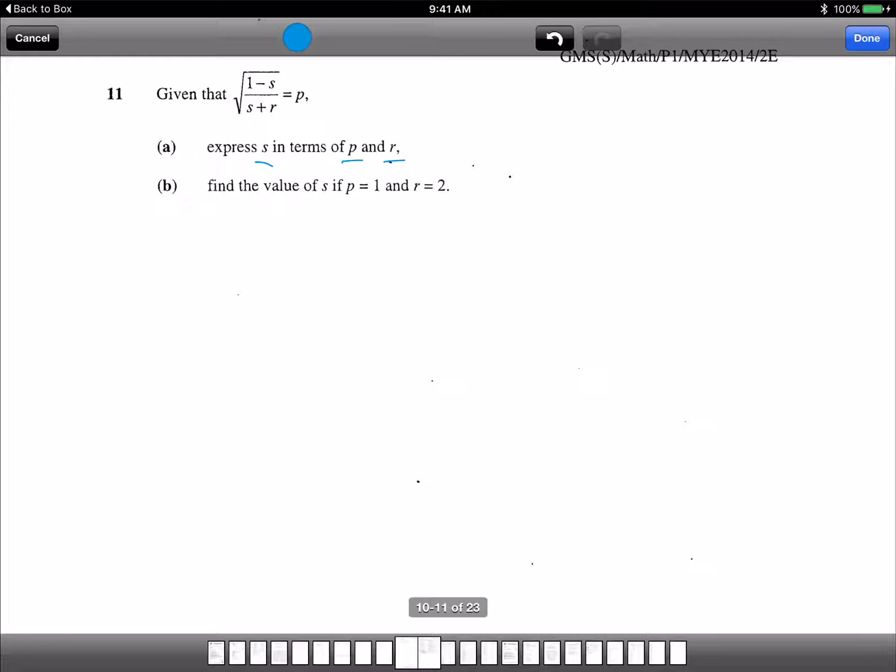So there is one very irritating thing which is the square root. What do you do to get out of the square root? You square it. When you square both sides, you get 1 minus S over S plus R equals to P squared. This is when you square both sides.